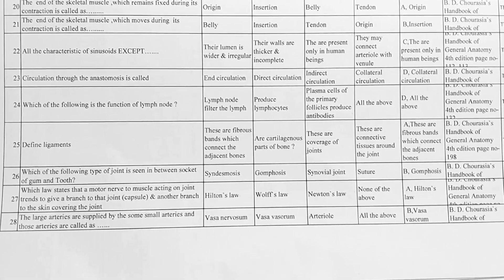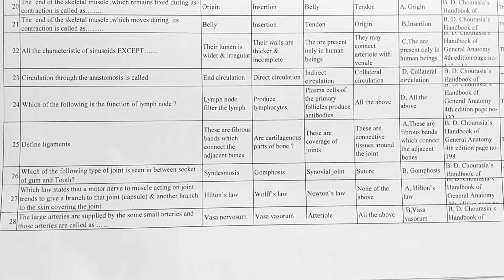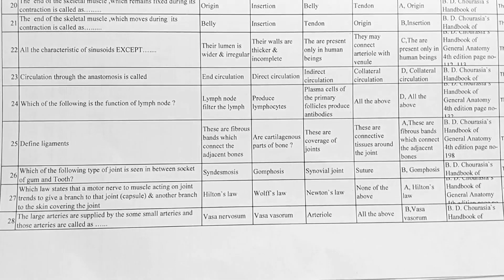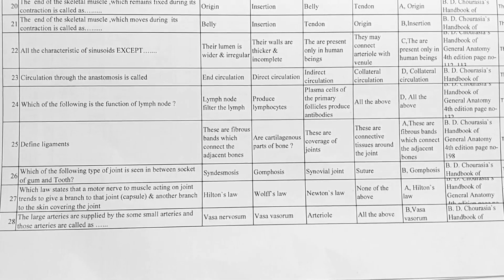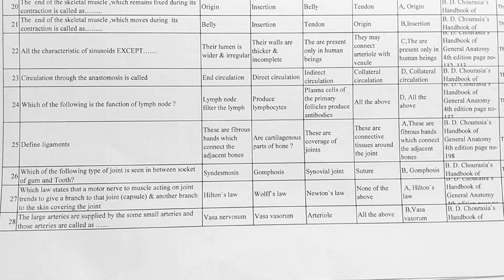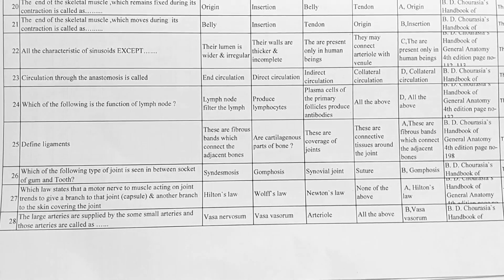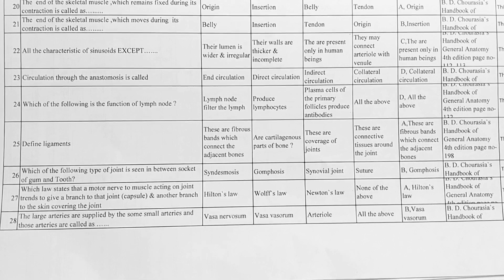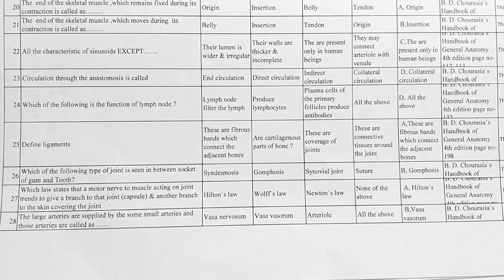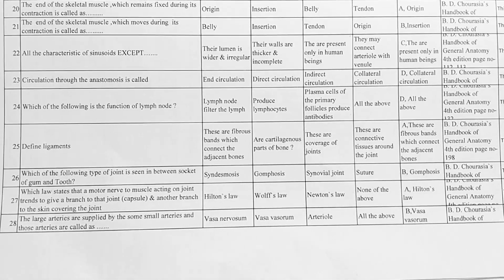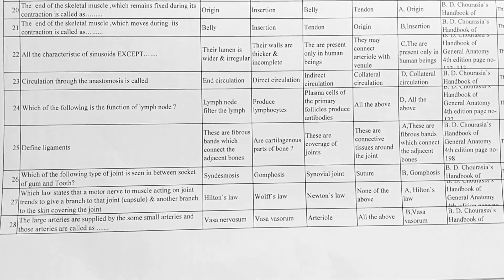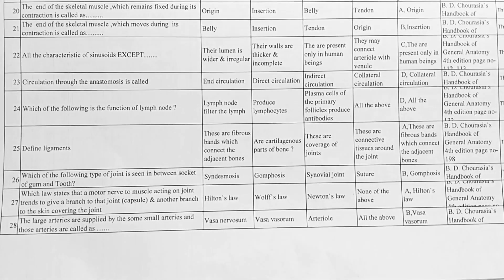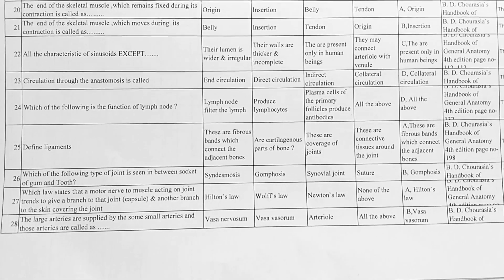Next, which of the following is the function of lymph nodes? Options: A. lymph node filters the lymph, B. produce lymphocytes and plasma cells of the primary follicle, C. produce antibodies, D. all of the above. Answer D is correct, all of the above.